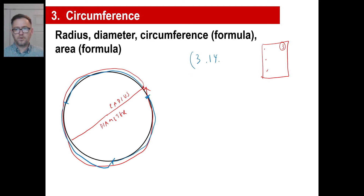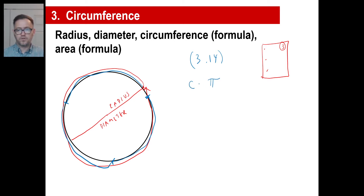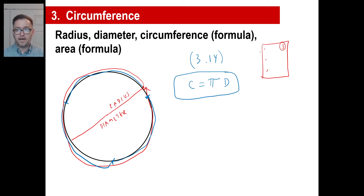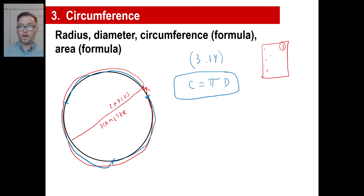That number is pi, represented by the Greek letter pi. The circumference of a circle equals pi, or 3.14, times the diameter. You need to memorize that — at least write it down in big numbers and letters in your notes and circle it or highlight it, so you can find it quickly.